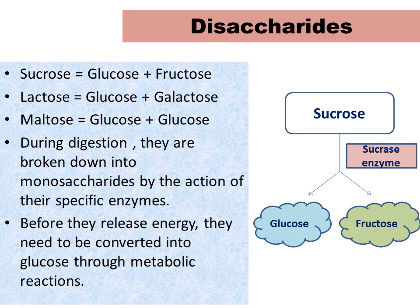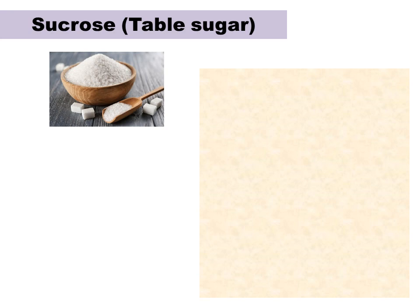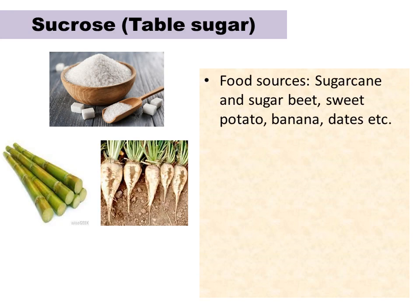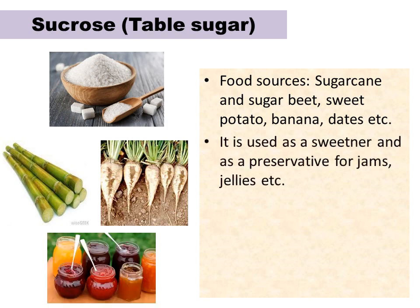Fructose is first converted into glucose before releasing energy. The same applies for maltose and lactose. First is sucrose, which is the most commonly used sugar, also known as table sugar. We get it from sugar cane and sugar beet. It is also found in many other foods like sweet potato, banana, dates, etc. Sucrose is used as a sweetener and as a preservative for jams and jellies.